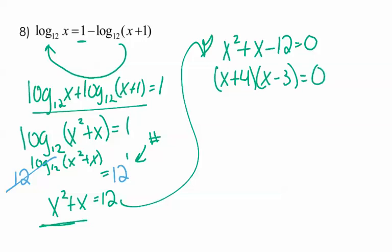So that means that x is going to equal negative 4 or 3. Keeping in mind that we've got to get them to be positive. You can't take the log of a negative number. So it has to be positive in any one of the pieces. So right here, that log of x, that negative 4, that is not going to work. We cannot take the log of negative 4.